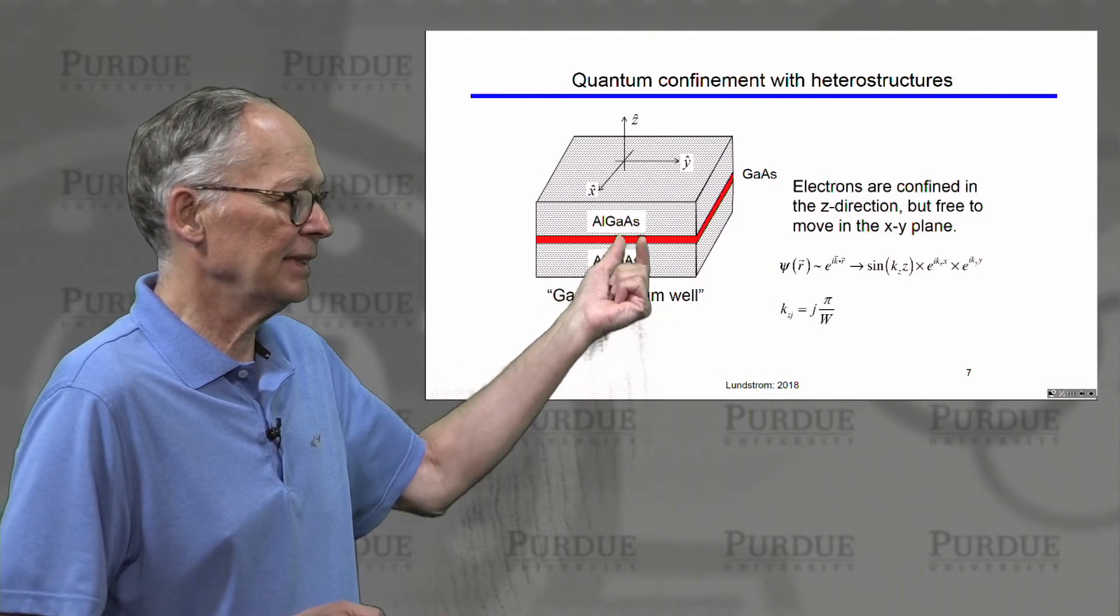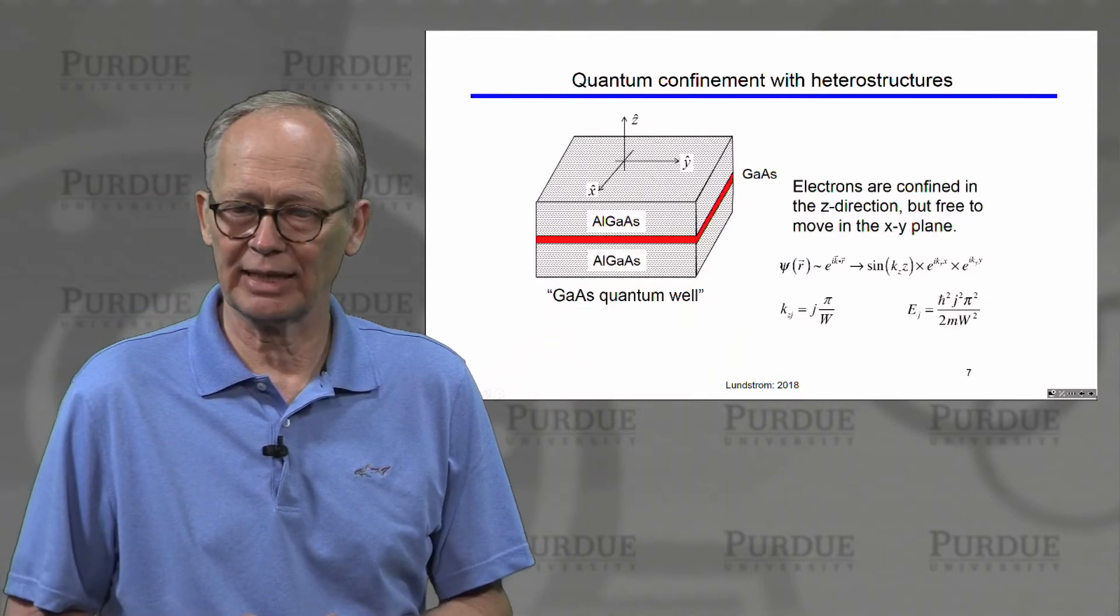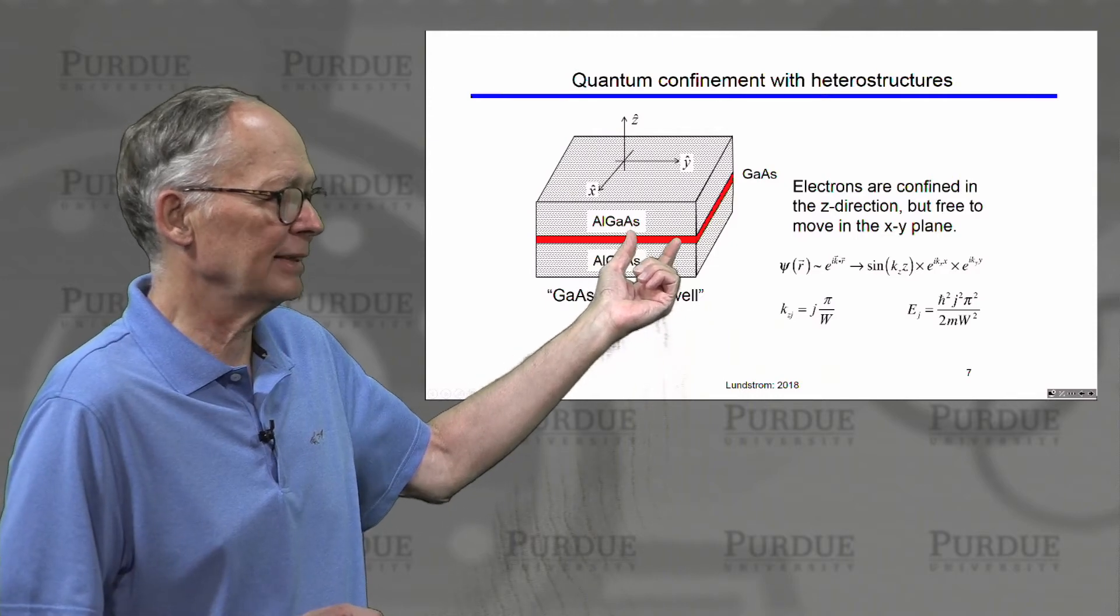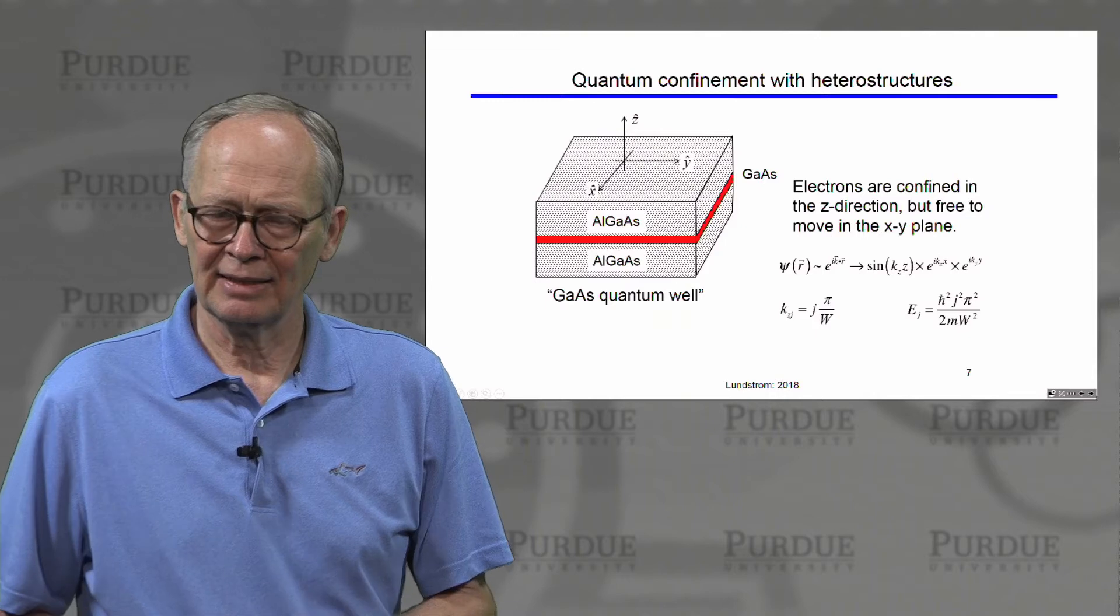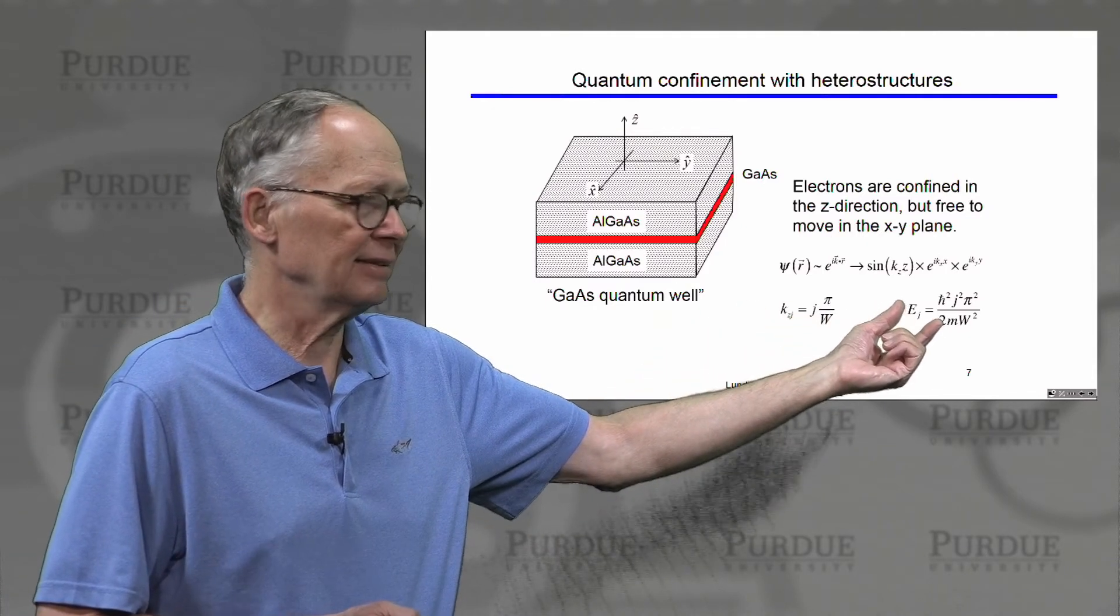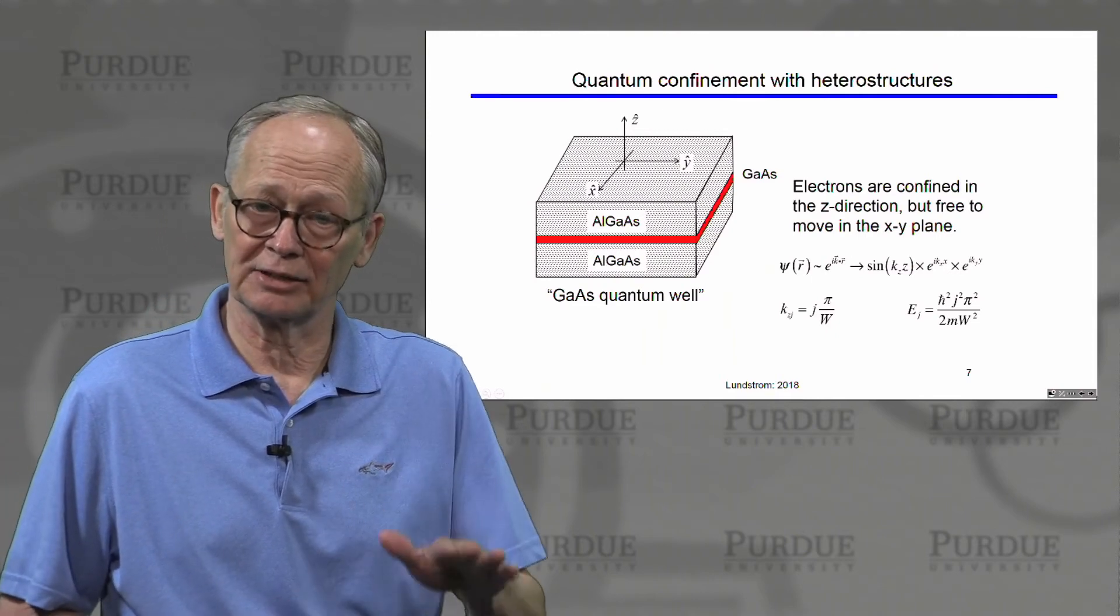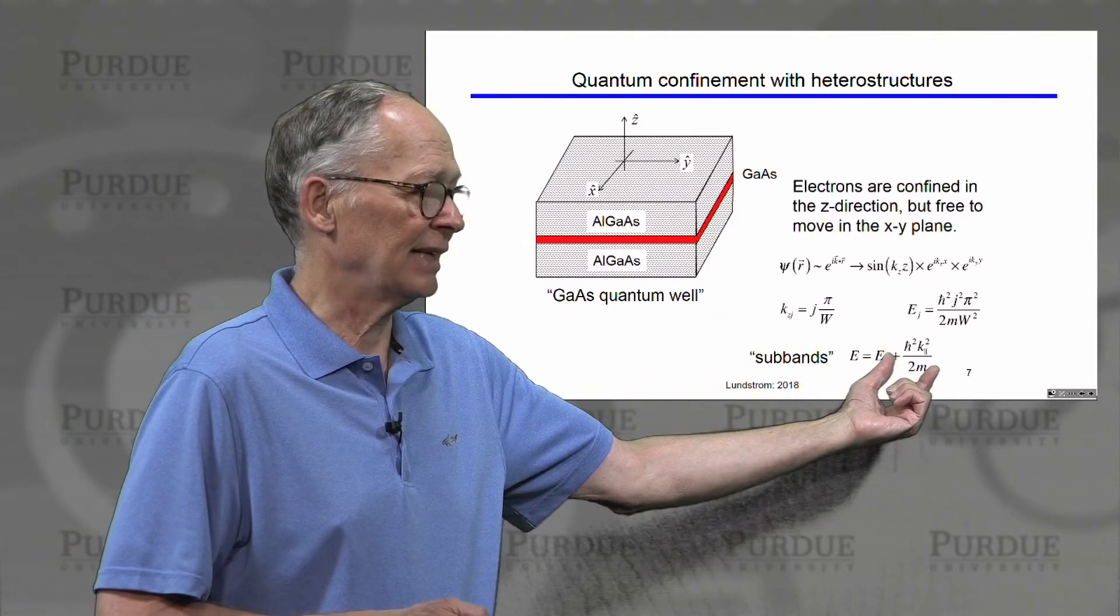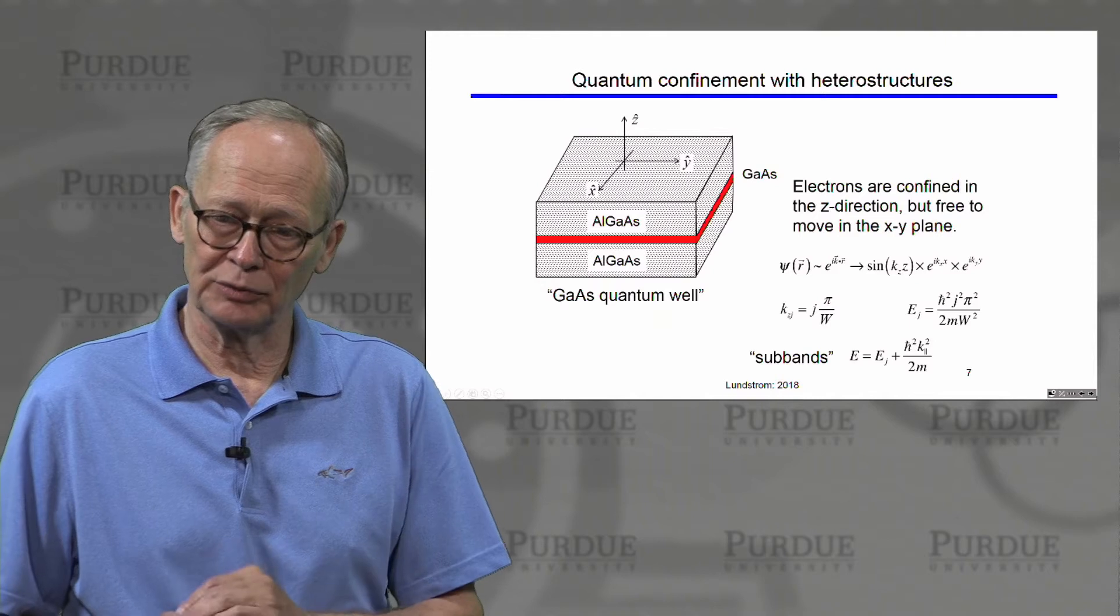The wave vector kz is quantized because of the confinement in the z direction. And that leads to a set of particle in a box type confinement energies. These are the various subbands. An electron in subband j cannot have an energy less than subband j but it can have a higher energy because it has kinetic energy associated with its motion in the xy plane. That kinetic energy is h bar squared k parallel squared over 2m.